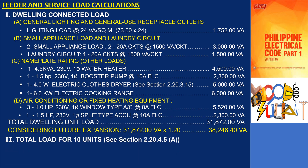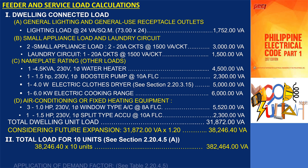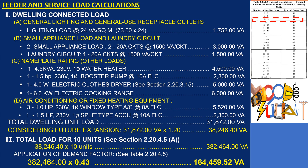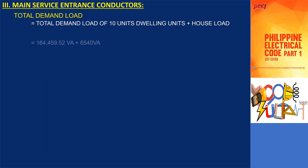For the feeder and service load of the multifamily dwelling, we multiply by the number of dwelling units, which is 10 units, giving a total load of 382,464 volt amperes. Applying the demand factor as per table 2.20.4.5 of 43%, the total demand load for 10 dwelling units is 164,459.52 volt amperes. Since we have a house load of 6,540 volt amperes, this must be included. Therefore, our feeder and service load is equal to 170,999.52 volt amperes.